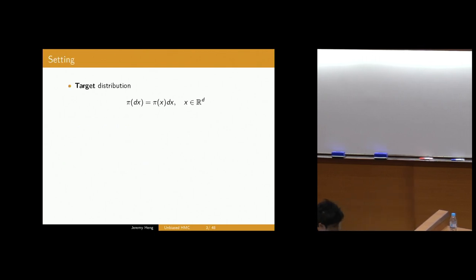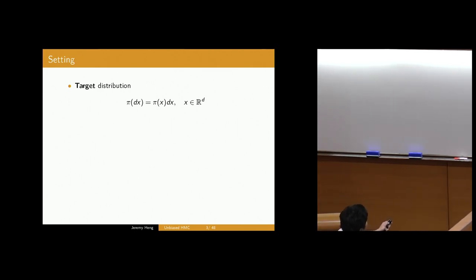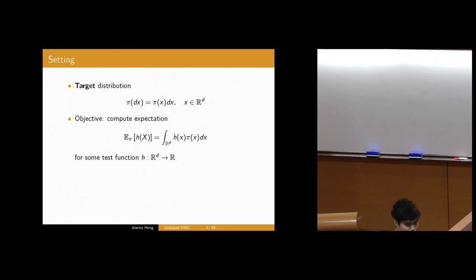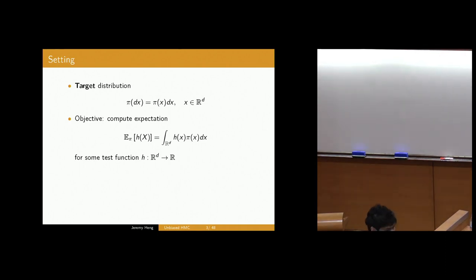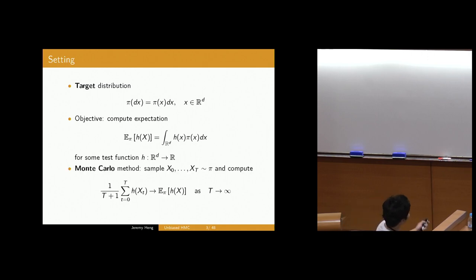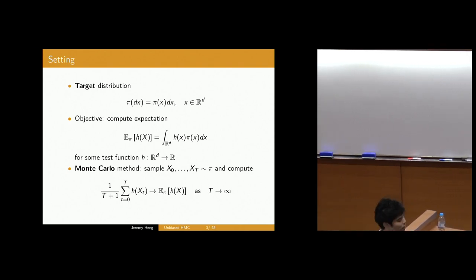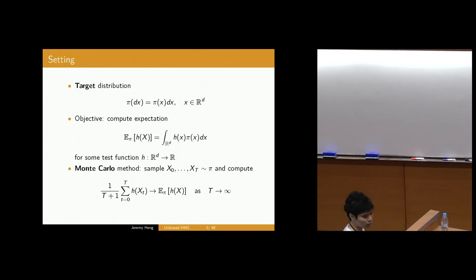The setting is quite typical. Let's assume that we have a target distribution I'll denote as pi. This has a density I'll write as pi of x with respect to Lebesgue measure on R^d. The objective here is to compute expectations of some test function h with respect to pi. So h will be something fixed throughout the talk. I'll assume that this integral is not tractable and d is large, so you would have to resort to Monte Carlo methods.